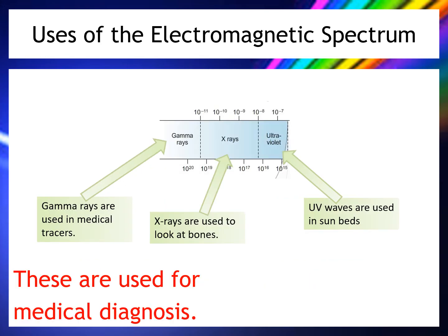At the other end of the electromagnetic spectrum, UV rays are used in sunbeds, and ultraviolet is the part of the spectrum that burns the skin. X-rays are used to look at bones — they pass through soft tissue but are absorbed by bones. If you shine X-rays through the body with a photographic plate behind, the shadow left shows the bones. Gamma rays are used in medical tracers, making this end of the spectrum important for medical diagnosis.